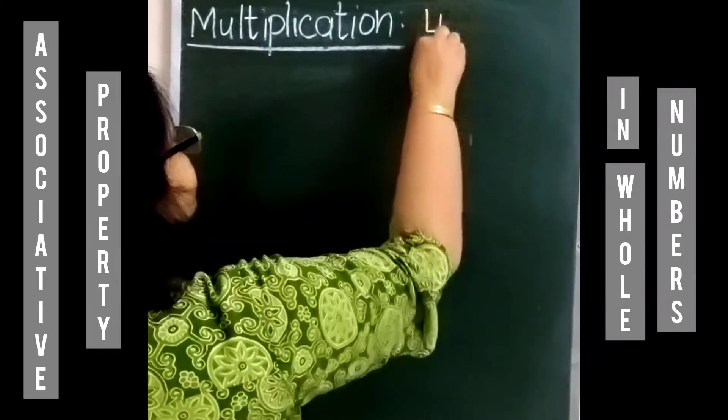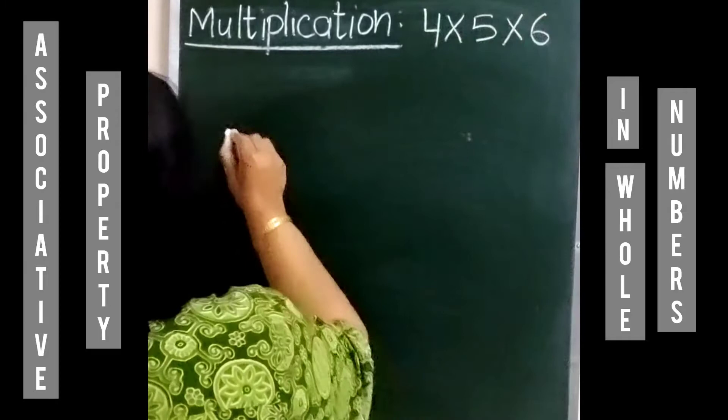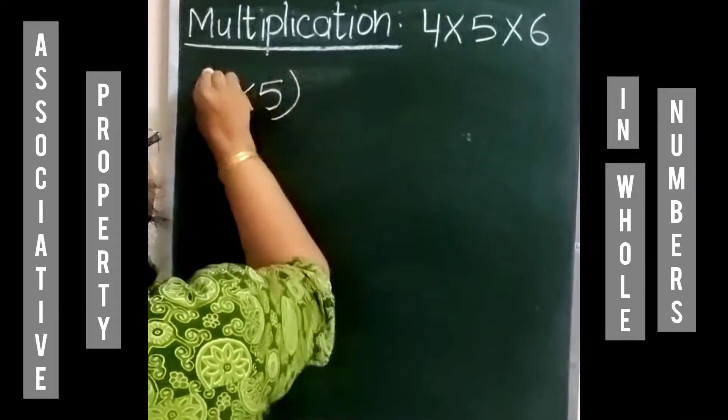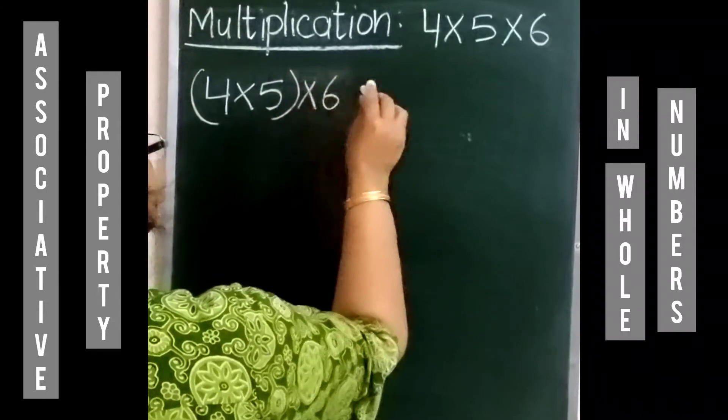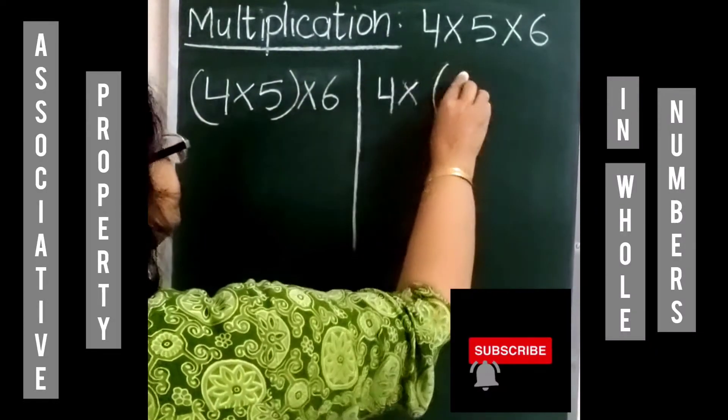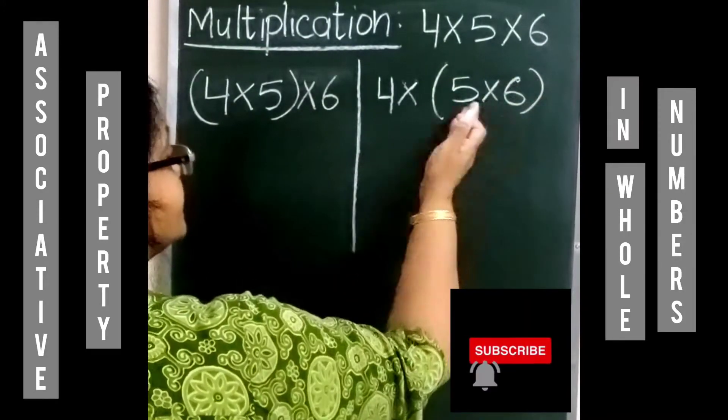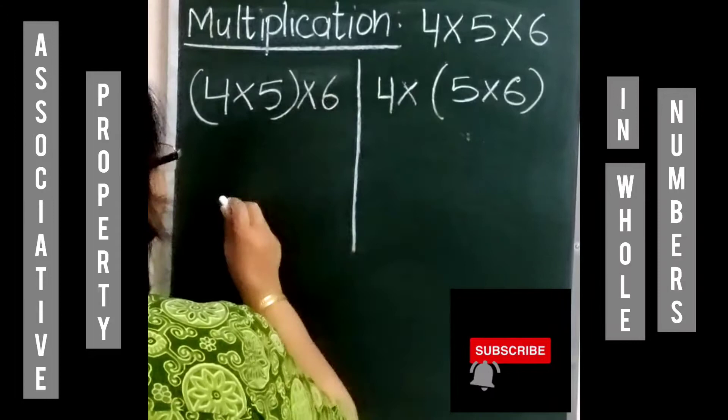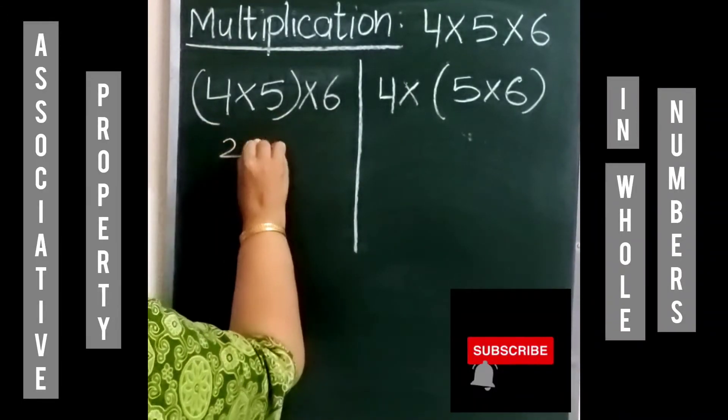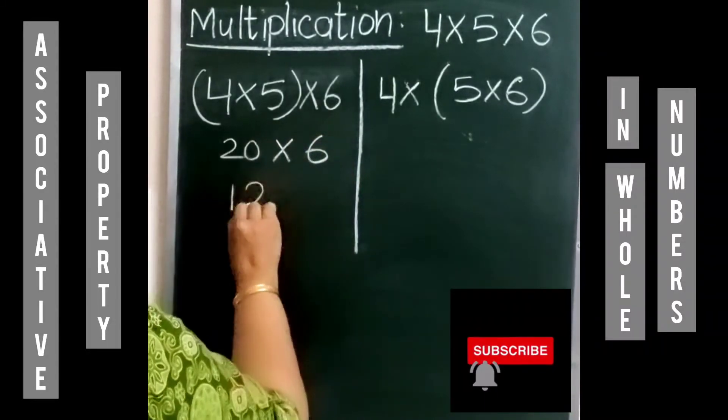Now if we take 4 multiplied by 5 multiplied by 6, then we can do this by making a group of 4 and 5 and then multiply by 6. Or the other way is first we multiply 5 and 6 and we multiply the product of 5 and 6 by 4. So 4 multiplied by 5 is 20, and 20 multiplied by 6 is 120.